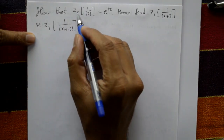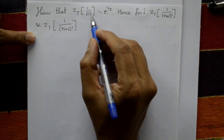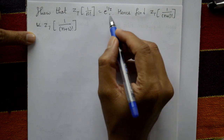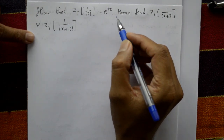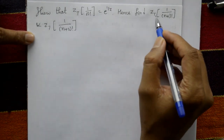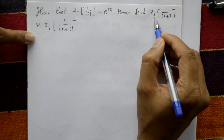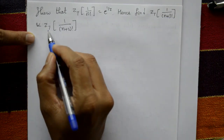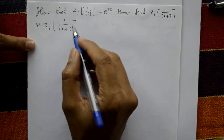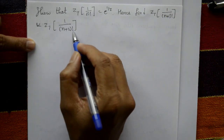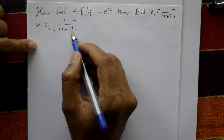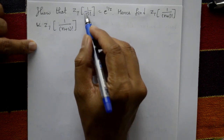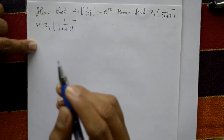Show that the Z transform of 1 upon n factorial is e to the power 1 by Z. Hence find the Z transform of 1 upon n plus 1 factorial and Z transform of 1 upon n plus 2 factorial. First show the first one, and after find these two.